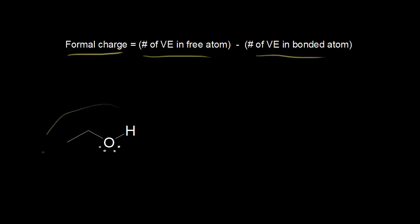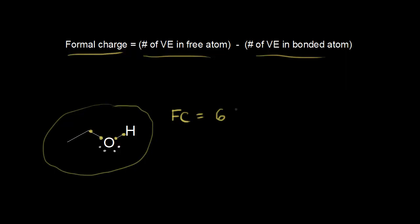So let's assign a formal charge to oxygen in this molecule. Remember that each bond is made up of two electrons — this bond right here is made up of two electrons, and this bond over here is made up of two electrons. Our goal is to find the formal charge on oxygen, which is equal to the number of valence electrons in the free atom — the number of valence electrons that oxygen is supposed to have, which is six — minus the number of electrons that oxygen actually has in our drawing.